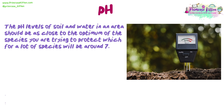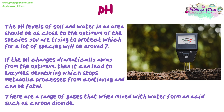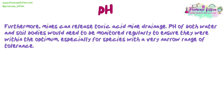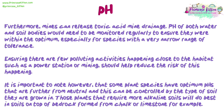The pH levels of soil and water in an area should be as close to the optimum of the species you are trying to protect, which for a lot of species will be around 7. If the pH changes dramatically away from the optimum, then it could lead to enzymes denaturing, which stops metabolic processes from continuing and can be fatal. There are a range of gases that when mixed with water form an acid, such as carbon dioxide. Furthermore, mines can release toxic acid mine drainage. pH of both water and soil bodies would need to be monitored regularly to ensure they were within the optimum, especially for species with a very narrow range of tolerance. Ensuring there are few polluting activities happening close to the habitat, such as power stations or mining, should help reduce the risk. It is important to note that some plant species have optimum pHs further from neutral, and this can be controlled by the type of soil they are grown in. Those plants that require more alkaline soils will do best in soils on top of bedrock formed from chalk or limestone, for example.